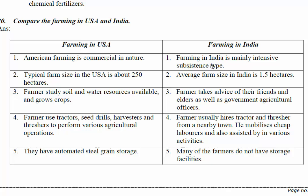Comparing farming in USA and India: American farming is commercial in nature, while India is mainly intensive subsistence type — for family consumption, not commercial. The typical farm size in the USA is about 250 hectares, while the average farm size in India is 1.5 hectares — a big difference.